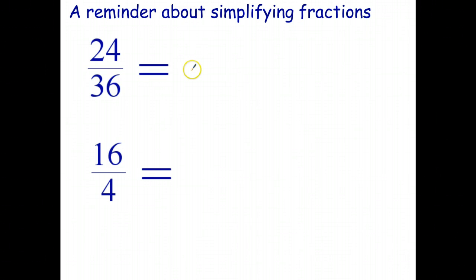I'm going to do this in a slightly different way to the way you've probably seen it before. I'm going to ask myself, what is the biggest number that's a factor of both 24 and 36? And the answer is 12.